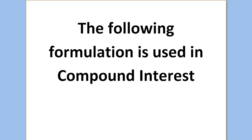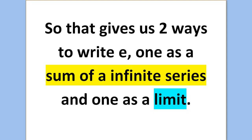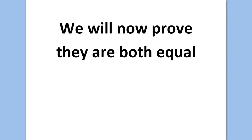The following formulation is used in compound interest. e is also equal to the following limit: the limit as n tends to infinity of 1 plus 1 over n, all to the power of n. So that gives us two ways to write e — one as a sum of an infinite series and one as a limit. We will now prove that they are both equal.